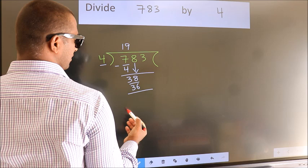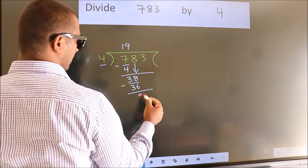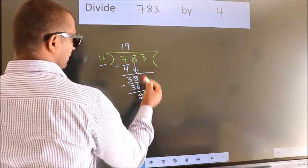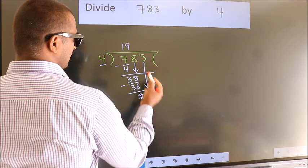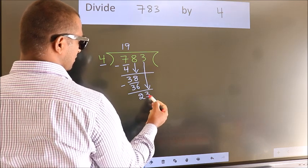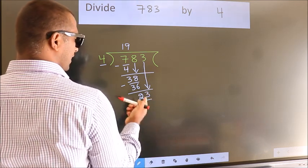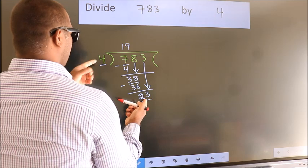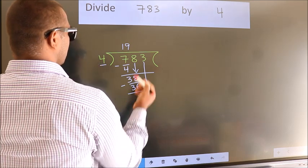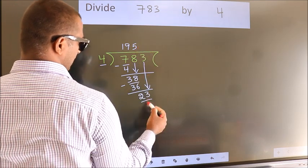Now, we subtract. We get 2. After this, bring down the beside number. So, 3 down. So, 23. A number close to 23 in 4 table is 4 fives 20.